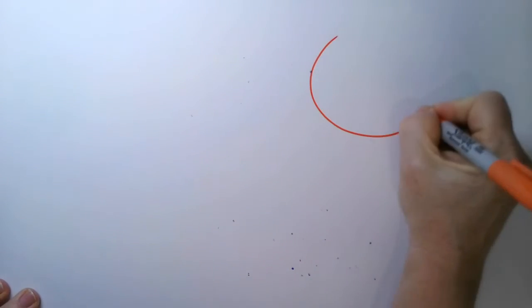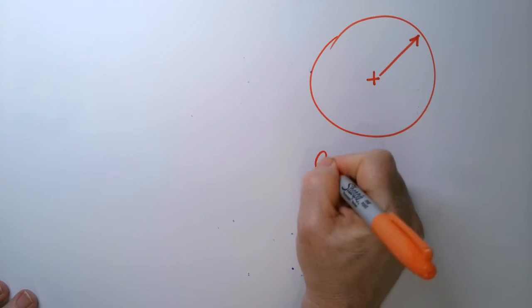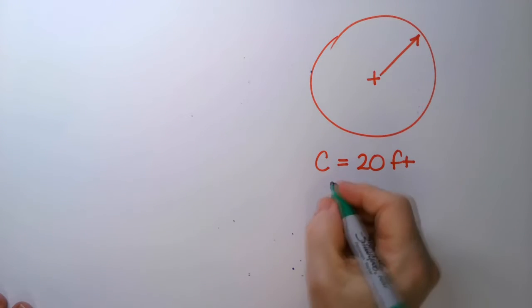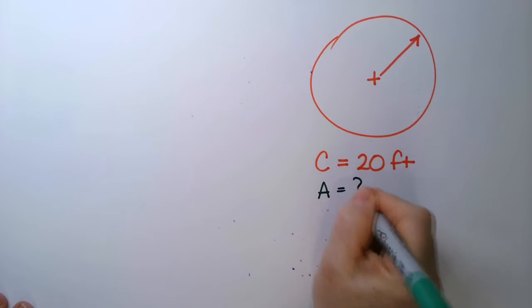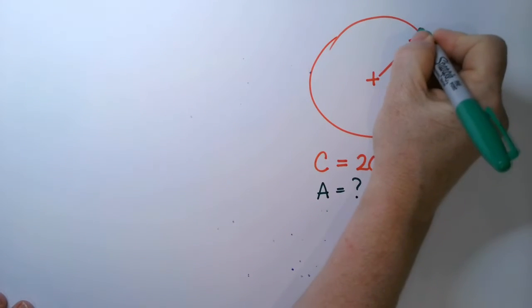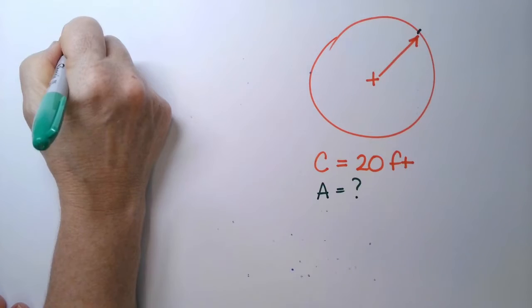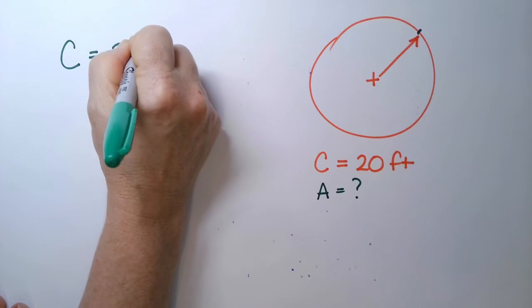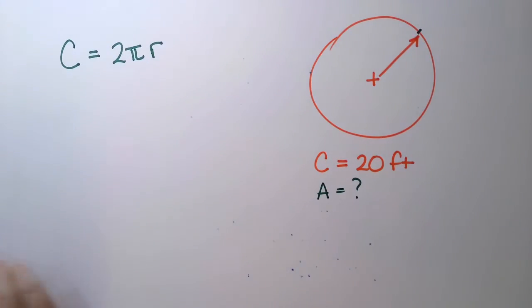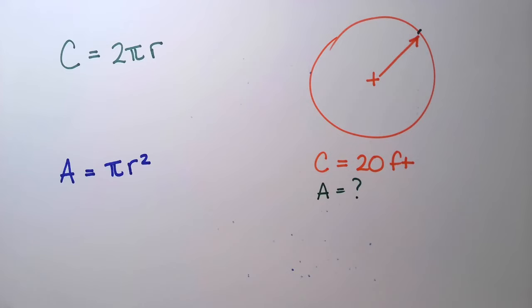Suppose I have a circle and I am given the circumference is equal to 20 feet, and I want to know what is the area. This is a two-part problem. I'm not given the radius — I'm given the circumference, which is the perimeter, the distance all the way around the circle.